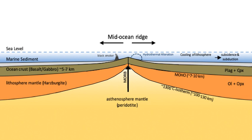Mid-ocean ridges are generally submerged deep in the ocean. It was not until the 1950s, when the ocean floor was surveyed in detail, that their full extent became known. The VEMA, a ship of the Lamont Doherty Earth Observatory of Columbia University, traversed the Atlantic Ocean recording data about the ocean floor. A team led by Marie Tharp and Bruce Heezen analyzed the data and concluded that there was an enormous mountain chain running up the middle. Scientists named it the mid-Atlantic ridge.